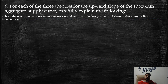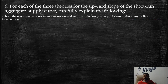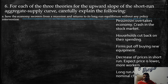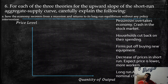Exercise 6: For each of the three theories for the upward slope of the short-run aggregate supply curve, carefully explain how the economy recovers from a recession and returns to its long-run equilibrium without any policy intervention.